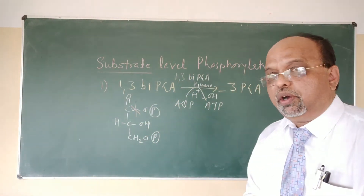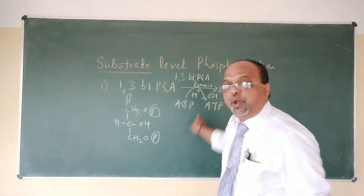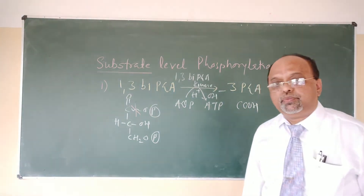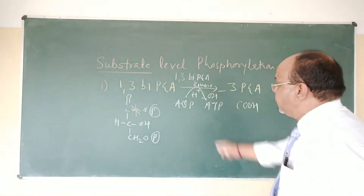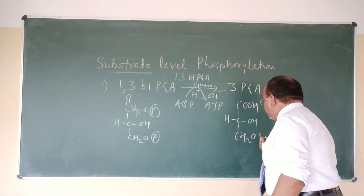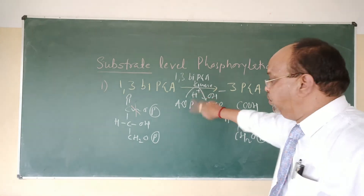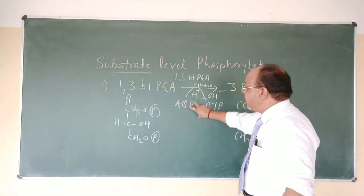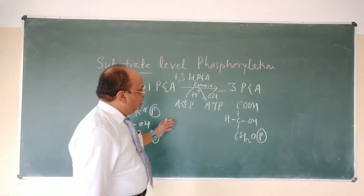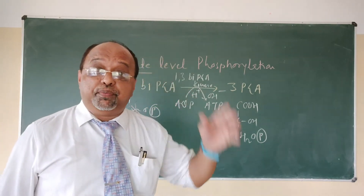Due to the breaking of this bond, what remains is C=O and OH from the splitting of the water molecule, giving C-OOH; the remaining structure is C-OH and CH₂-O-P. This is known as 3-phosphoglycerate. During the reaction, the high-energy phosphate group is transferred to ADP, which becomes ATP, and due to the loss of this phosphate group, the compound becomes 3-phosphoglycerate. This is one representative example of substrate-level phosphorylation.